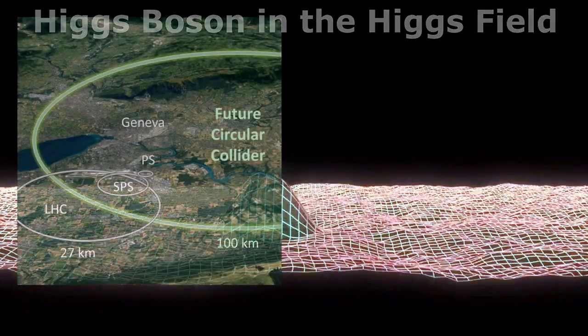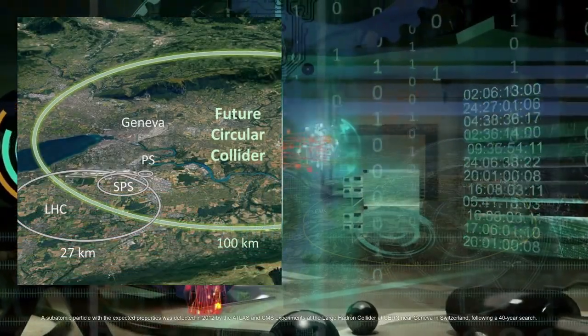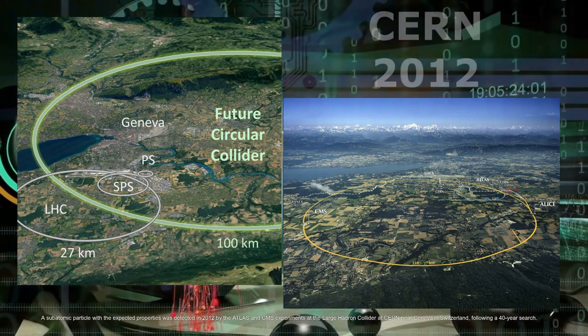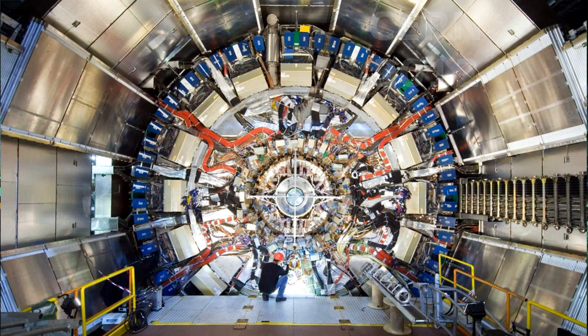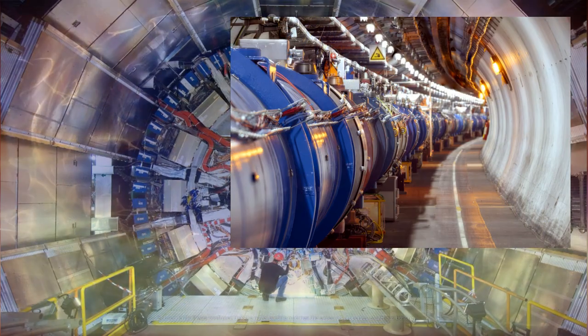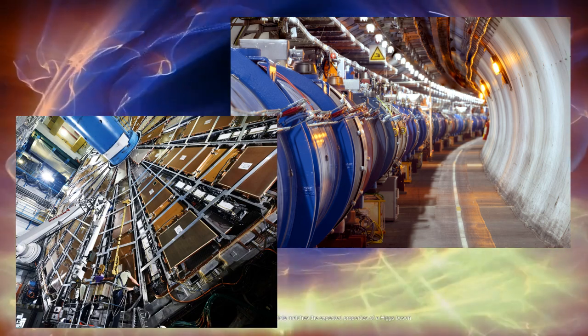A subatomic particle with the expected properties was detected in 2012 by the ATLAS and CMS experiments at the Large Hadron Collider at CERN near Geneva, Switzerland, following a 40-year search. Subsequently it was confirmed that the novel particle matches the expected properties of a Higgs boson.